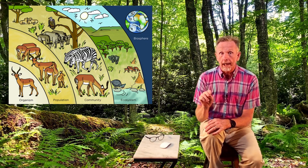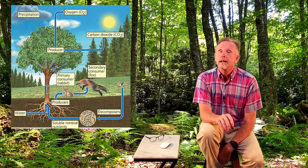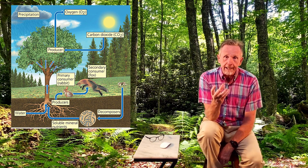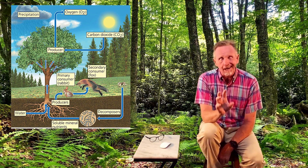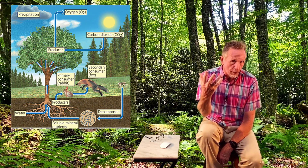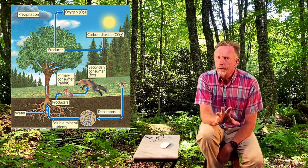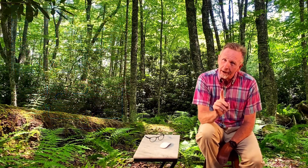Next we look at feeding levels. We classify organisms as either producers or consumers. A producer is something like a plant — something with chlorophyll that makes its own food from an energy source. Almost all producers get their energy from the Sun.